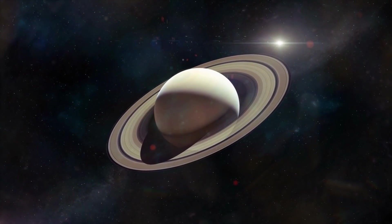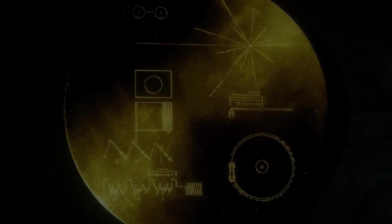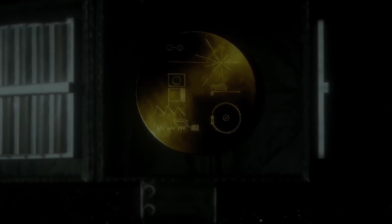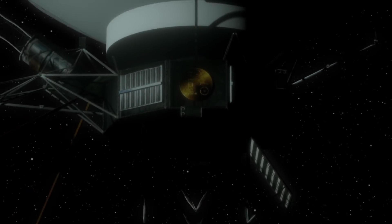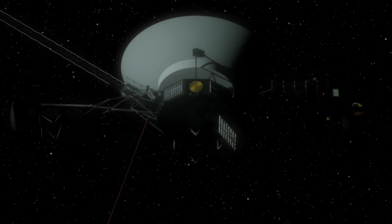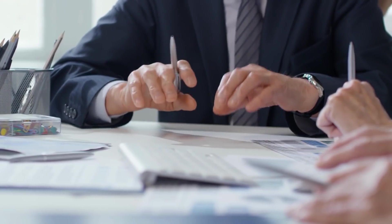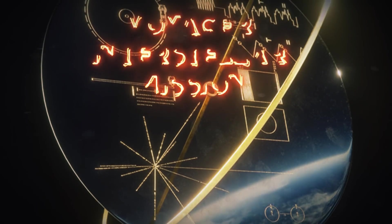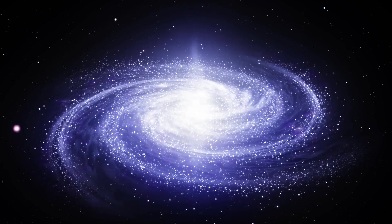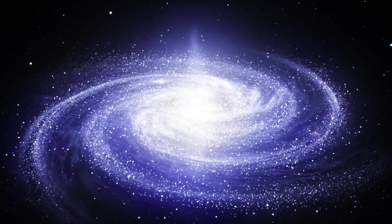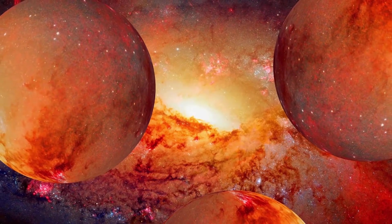32 years after its encounter with Saturn, Voyager 1 crossed interstellar space and became the furthest human-made object in the universe. At this point, the project was renamed the Voyager Interstellar Mission, and it was expanded to investigate the solar system beyond our outer planets.